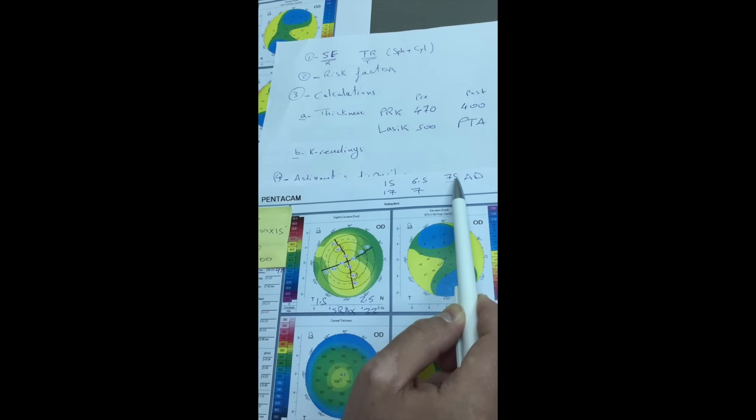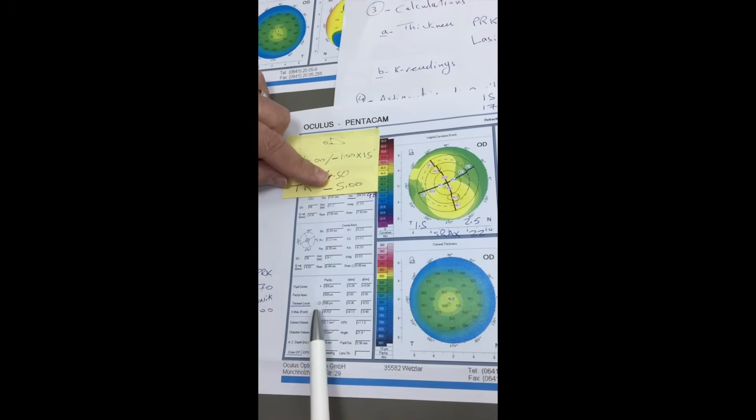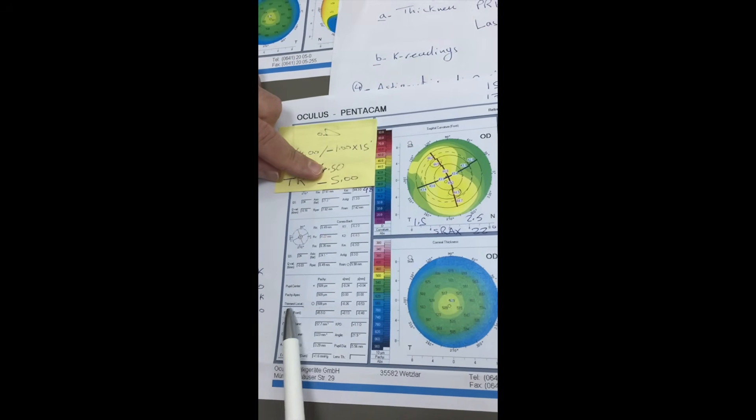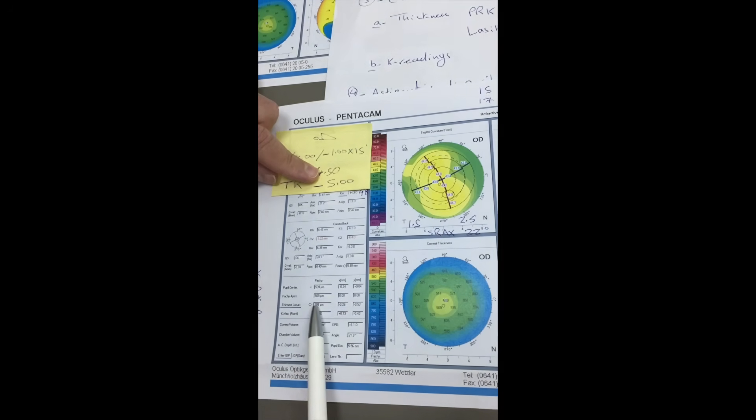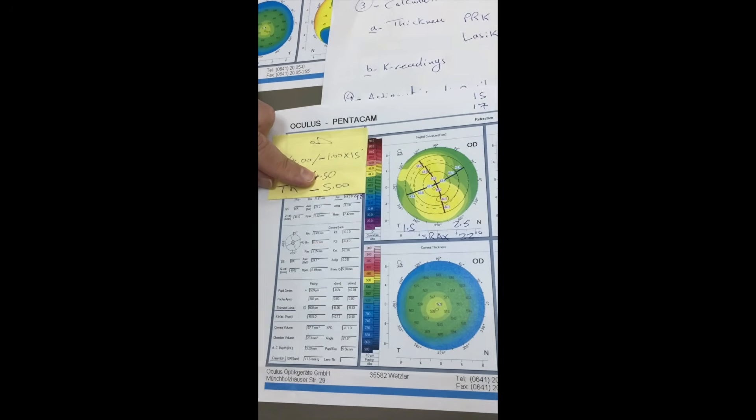Now we deduct the 75 microns from the thinnest location, which is almost 510. So final corneal thickness will be above 400. So this case is suitable for PRK.